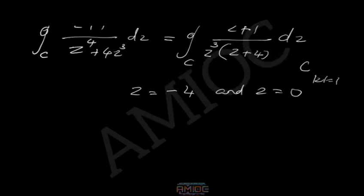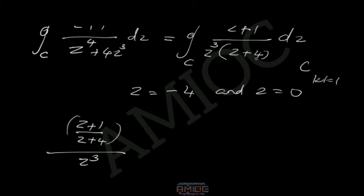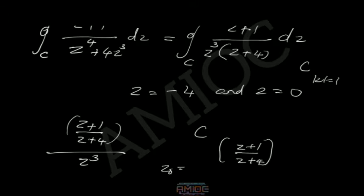Therefore, if we take the function f(z) = (z+1)/(z+4), then the integrand (z+1)/(z³(z+4)) can be written as f(z)/z³. The function (z+1)/(z+4) is analytic on and interior to C, while z³ fails to be analytic at the point z₀ = 0.